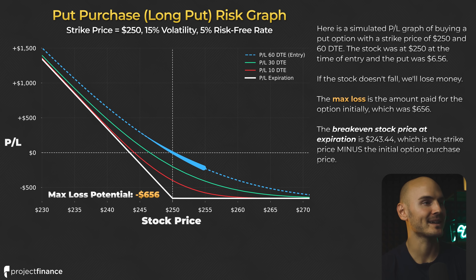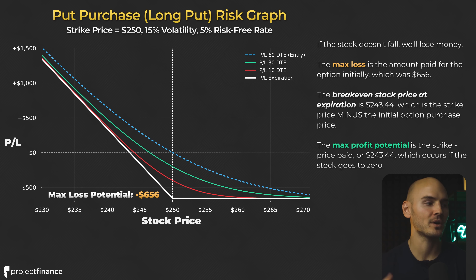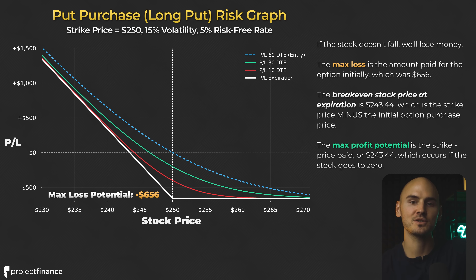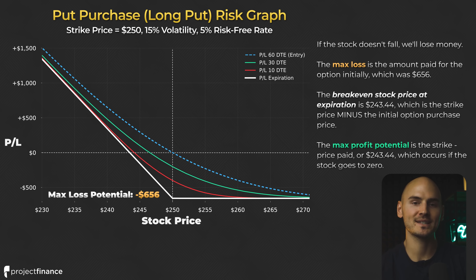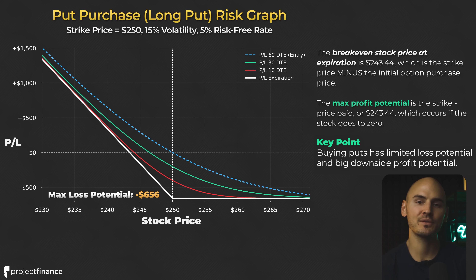But if we look at the current P&L at the time of entering the trade, we can start making money as soon as the stock price starts to fall. The max profit potential when buying a put option is the strike price minus the amount we pay, which is $243.44, occurring if the stock price goes to zero. If the stock price goes to zero, the put option is worth its strike price of $250, since it can sell shares at $250 when the stock price is zero — a benefit of $250 per share. Since we paid $6.56, our gain on the trade would be $243.44. The main takeaway is that when you buy puts, you have significant profit potential when the stock price falls and limited loss potential when the stock price increases.